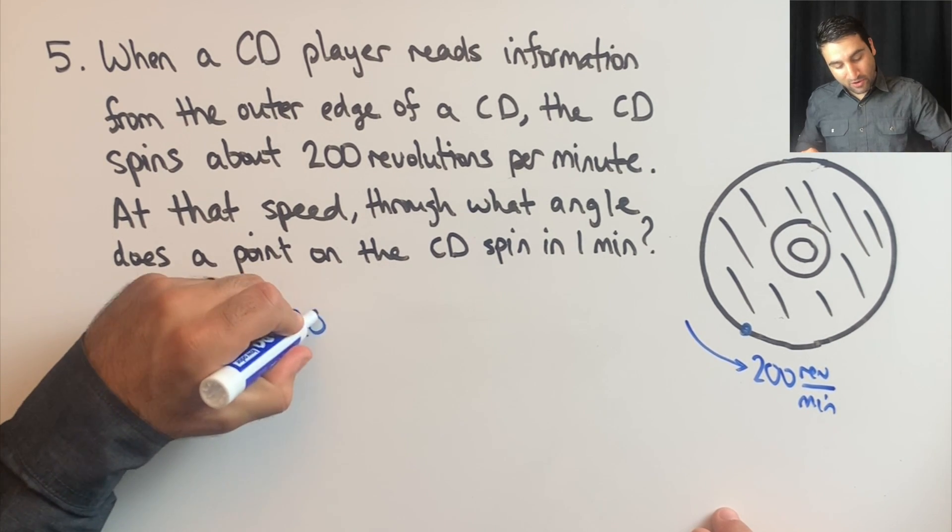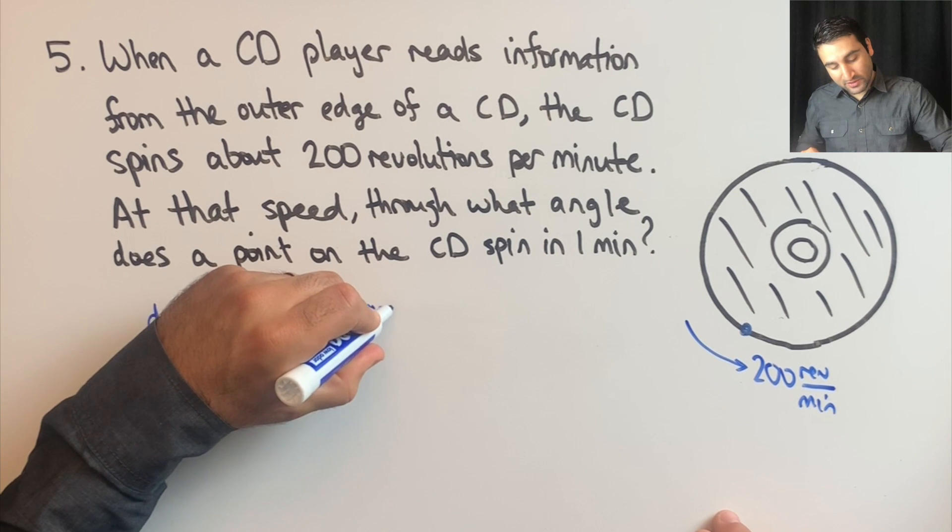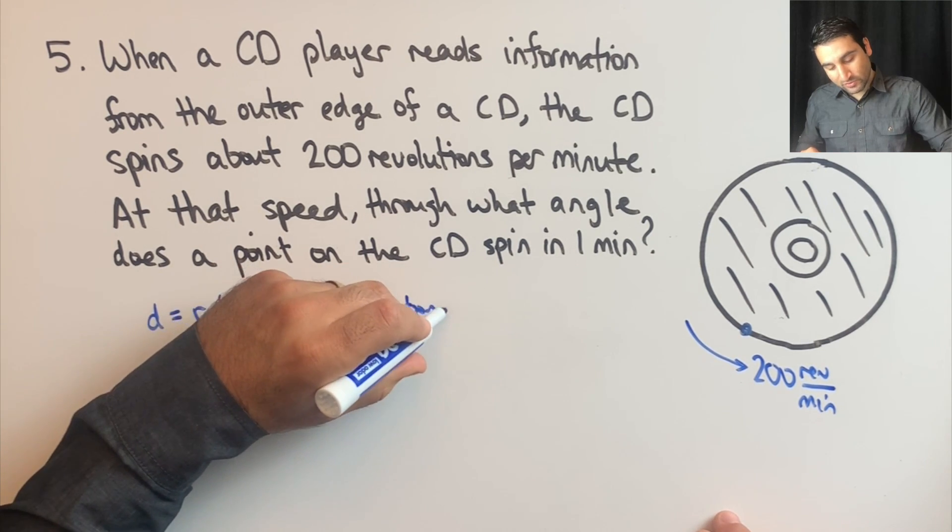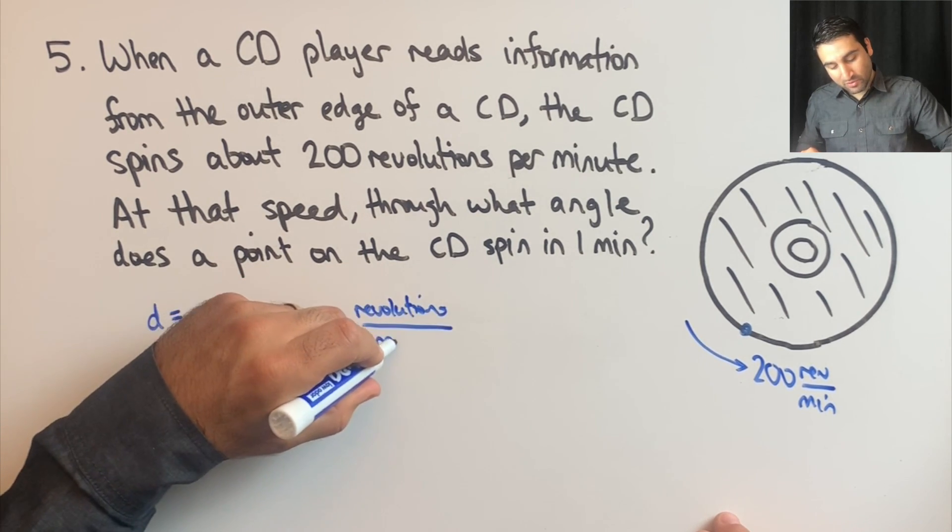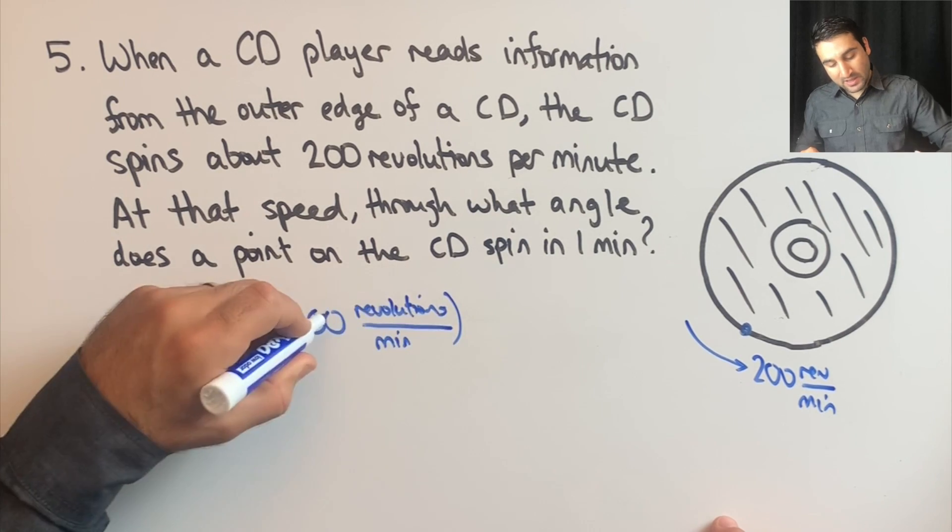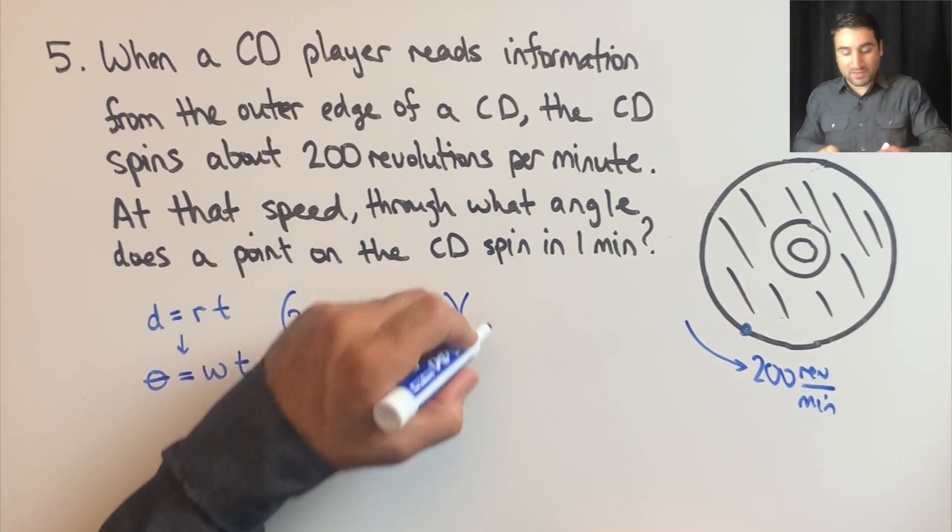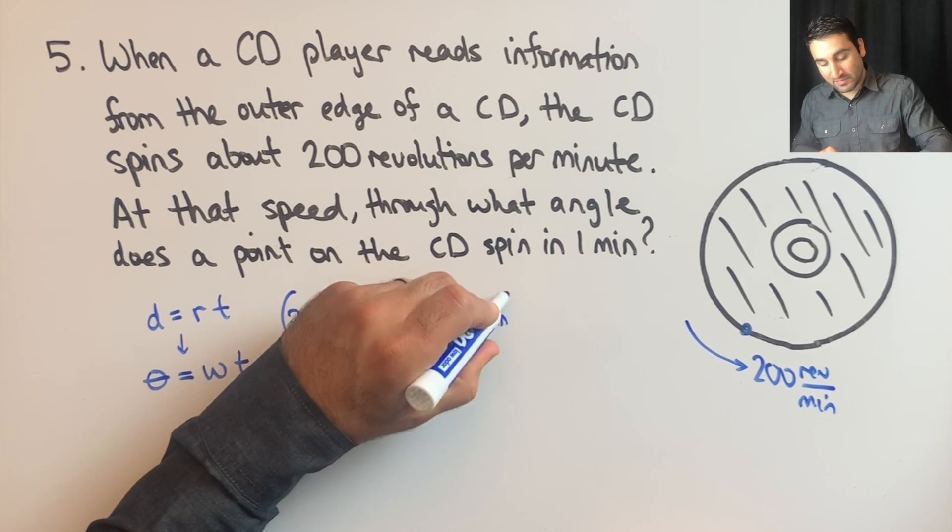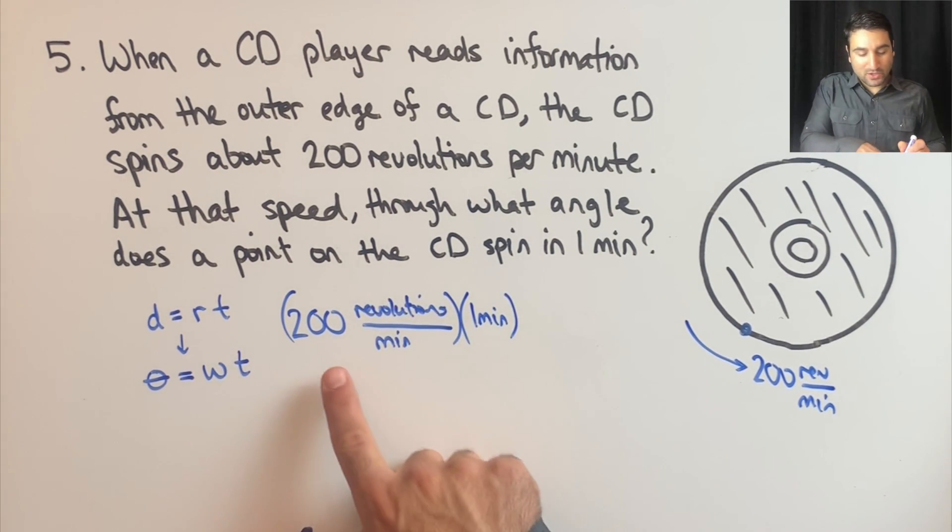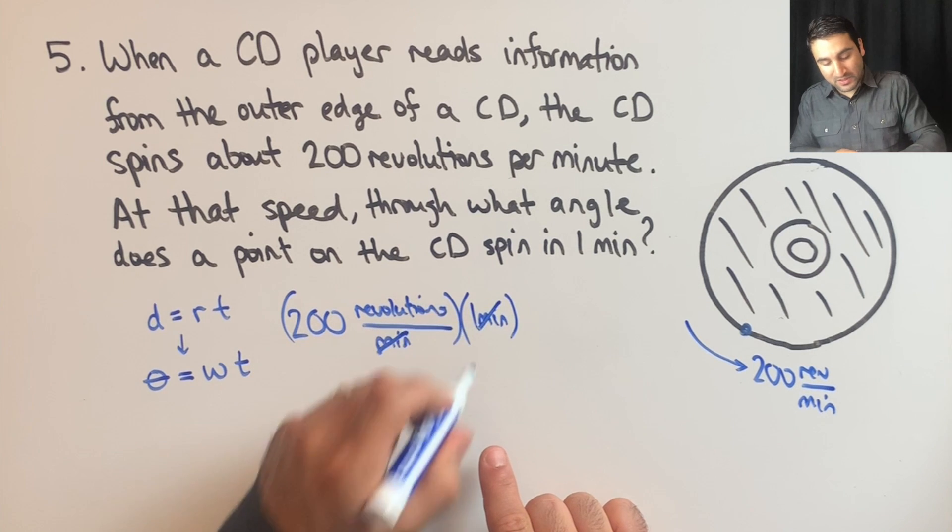We're going to first take our rate of 200 revolutions per minute, and we are going to multiply it by one minute, since that is the amount of time allotted.